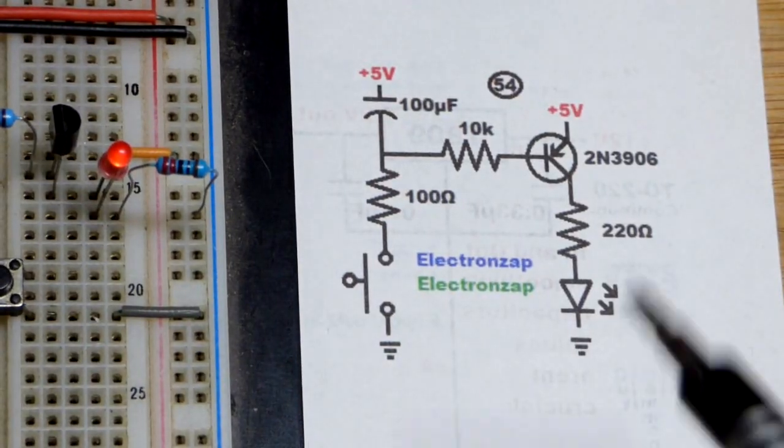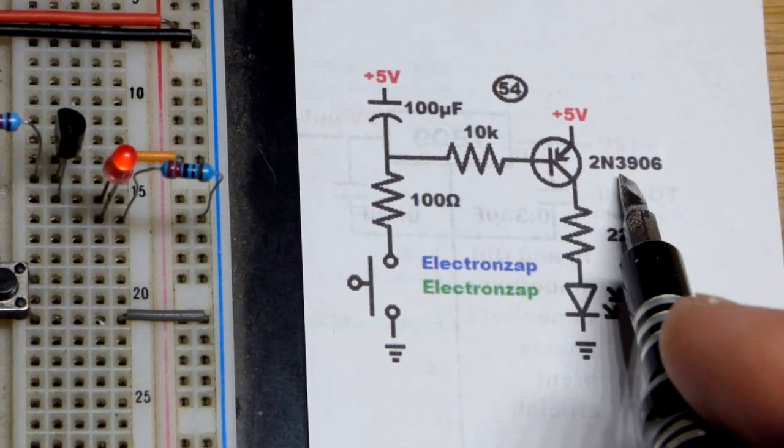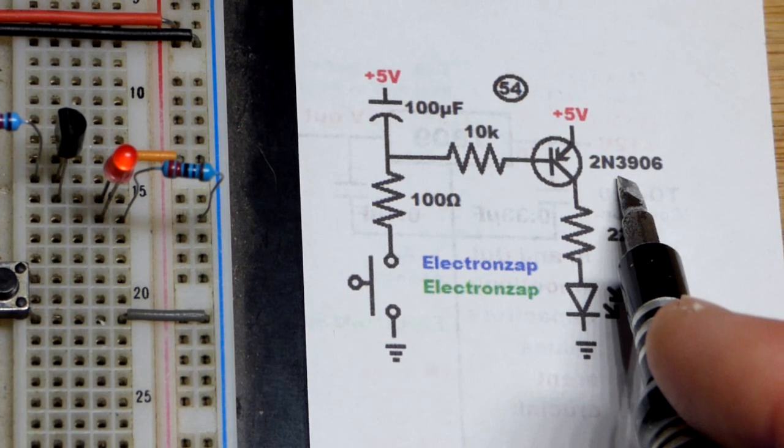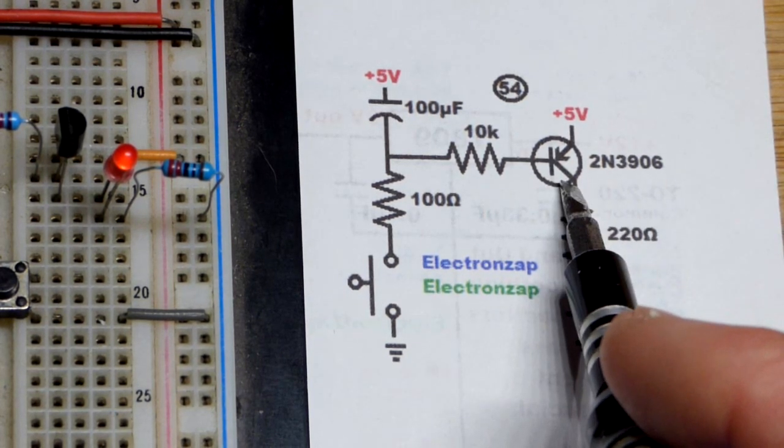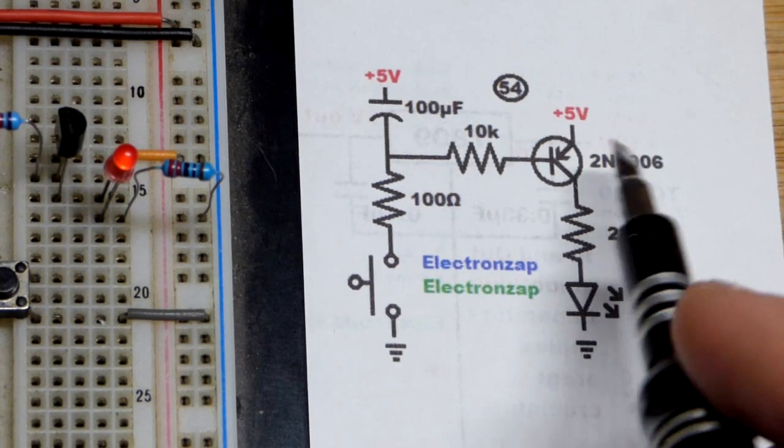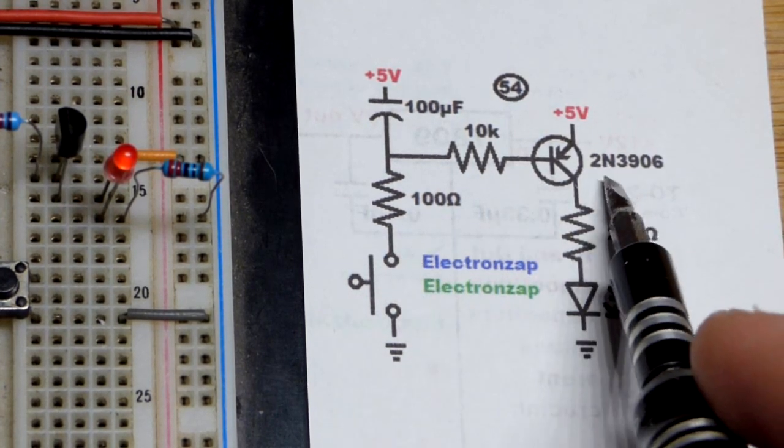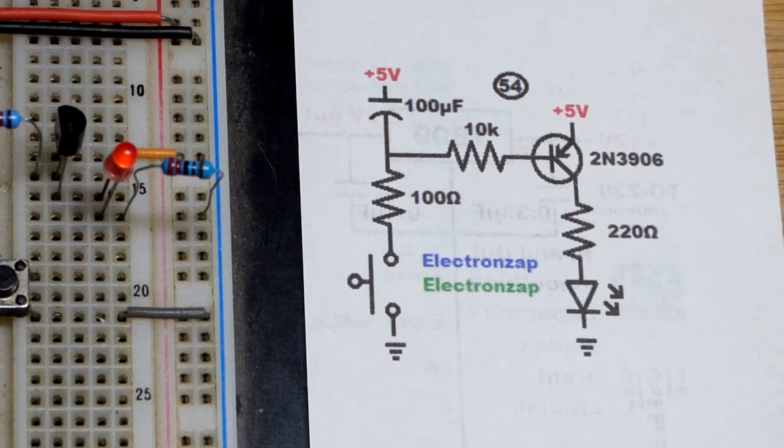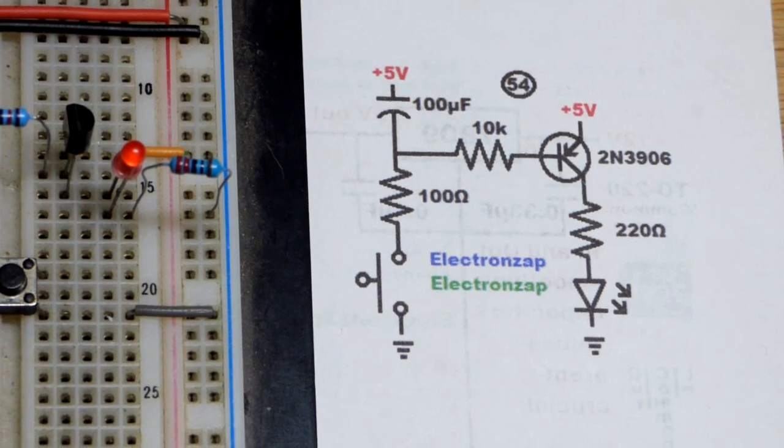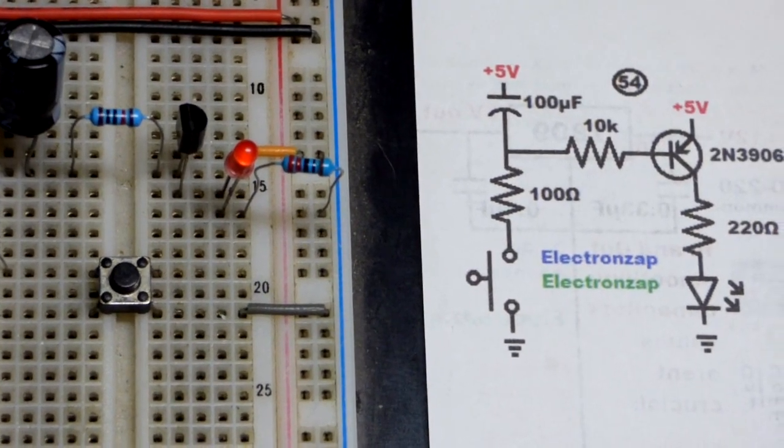We also looked at the NPN version in the last video. You can do either one. You'll almost always see NPN bipolar junction transistor circuits. You can make those same exact circuits with the PNP, other than the current flows in opposite directions. That's good practice. If you see an NPN circuit you like, try to make it with the PNP.